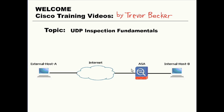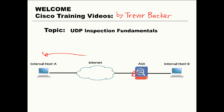Let's look at the following example to reiterate this. Let's say, for example, the access list that's applied to the external interface on the firewall is permitting UDP traffic on some random UDP port number. If host A sends a UDP packet on that port, it's going to hit that access list and it's going to be permitted through. Next, the firewall will either use an existing xlate entry or create a new one.